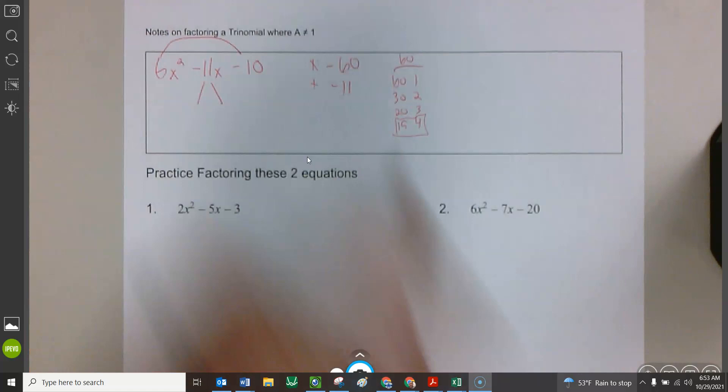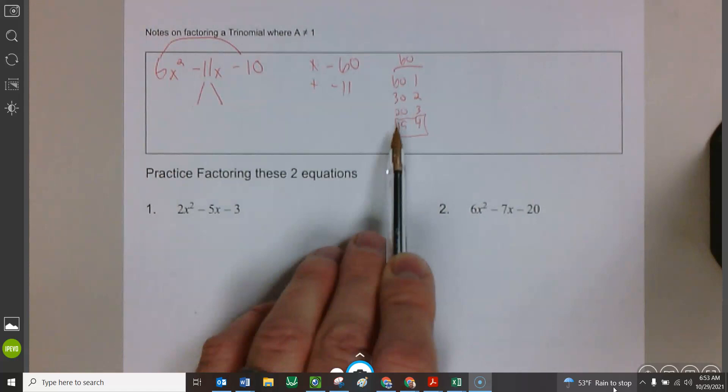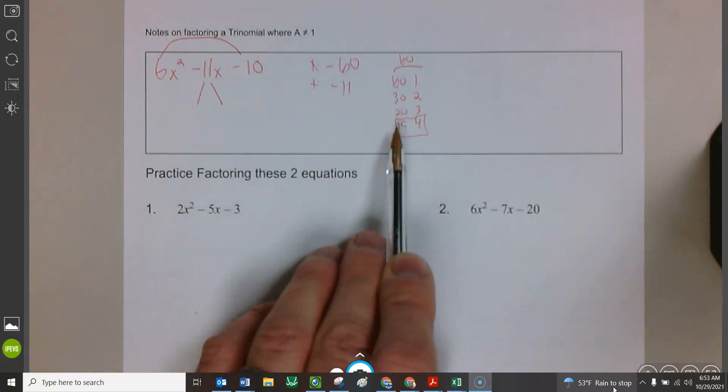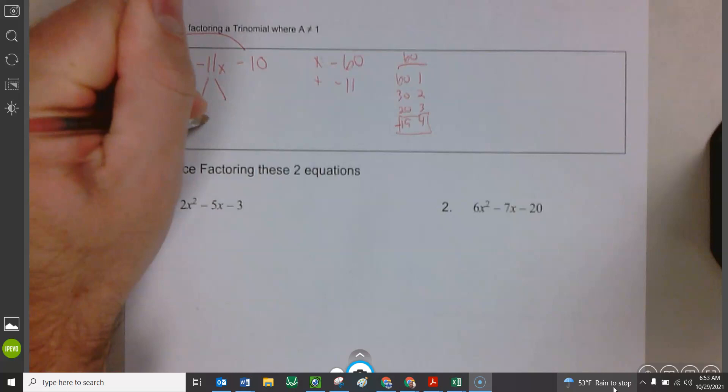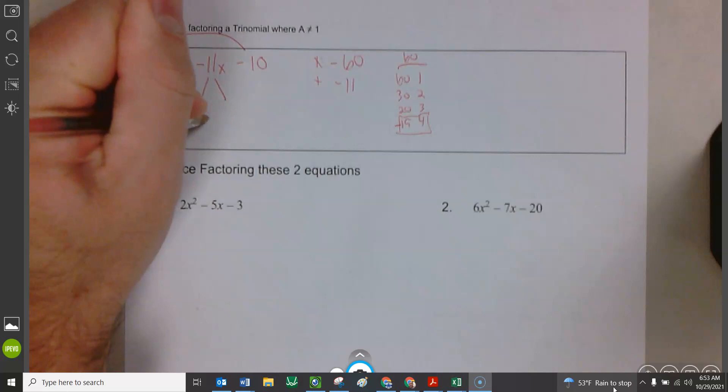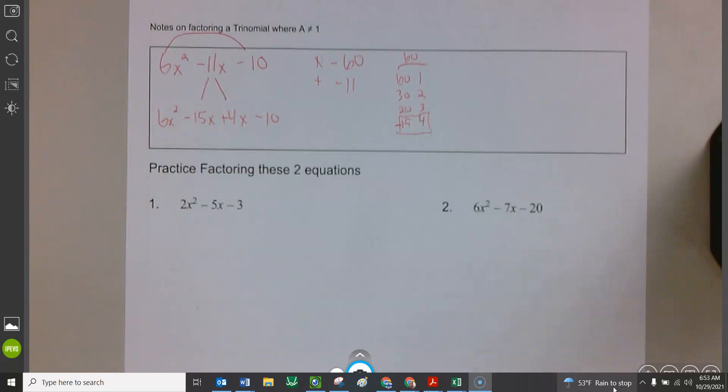So we found our two numbers. Ding, ding, ding, ding, ding. Now we're going to have to go back and actually do the replacement. I'm replacing negative 11x with 15x. Negative 15x, by the way. Negative 15x and positive 4x. So I'm going to rewrite the whole thing. 6x squared minus 15x plus 4x minus 10. There we go. That's the new stuff. That's it. The new stuff.